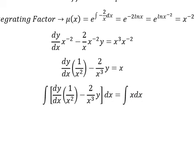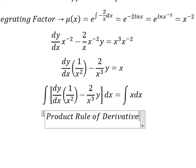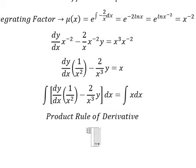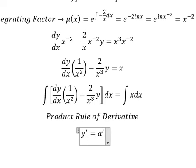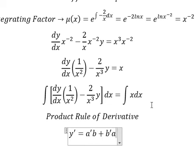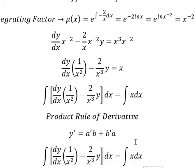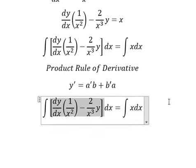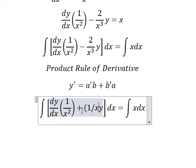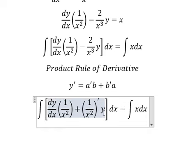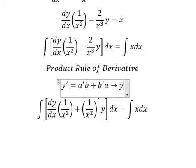Now we can apply the product rule. The first derivative of (u·v) equals the first derivative of u multiplied by v, plus the first derivative of v multiplied by u. So the integration of the left side gives us y equals u·v.